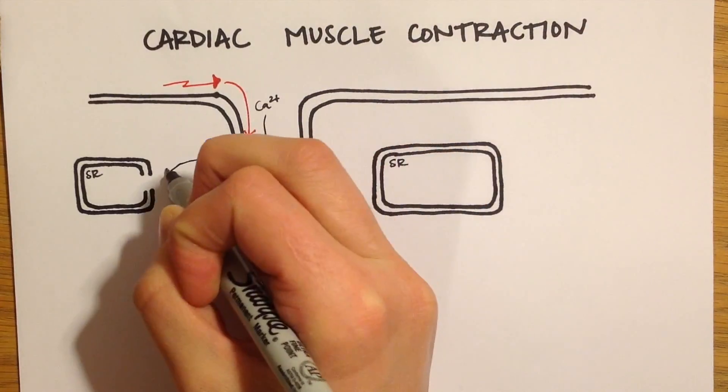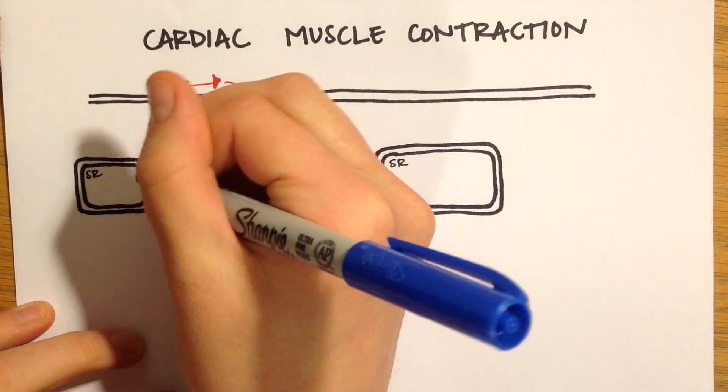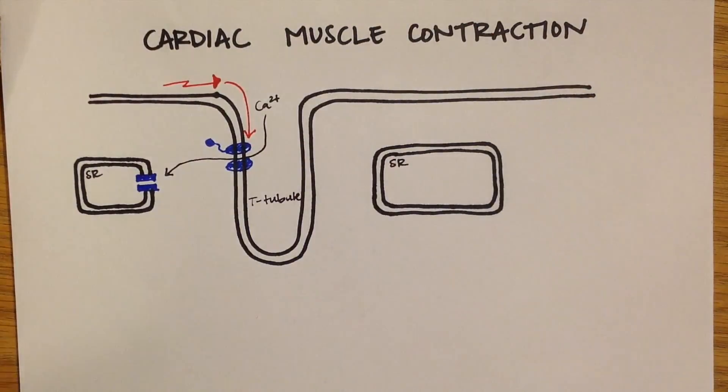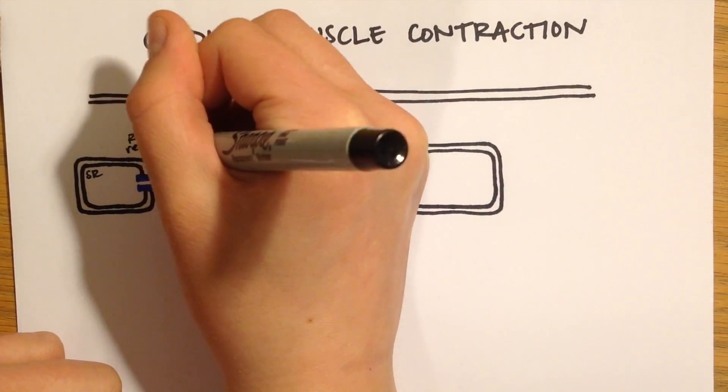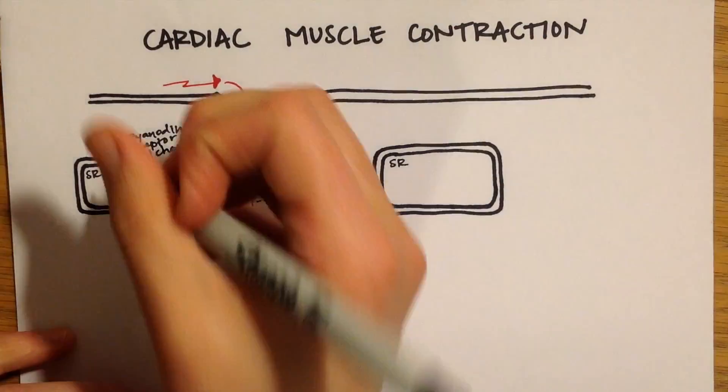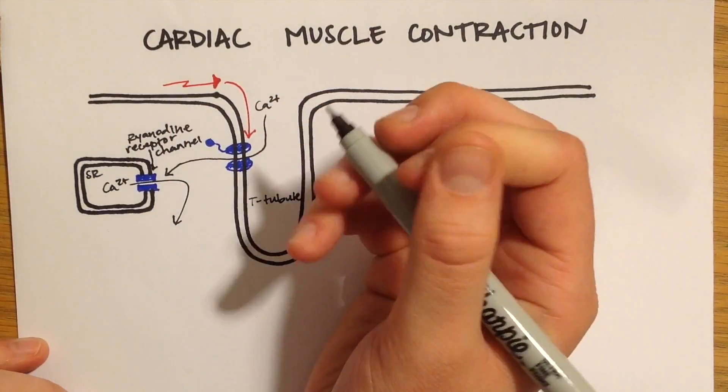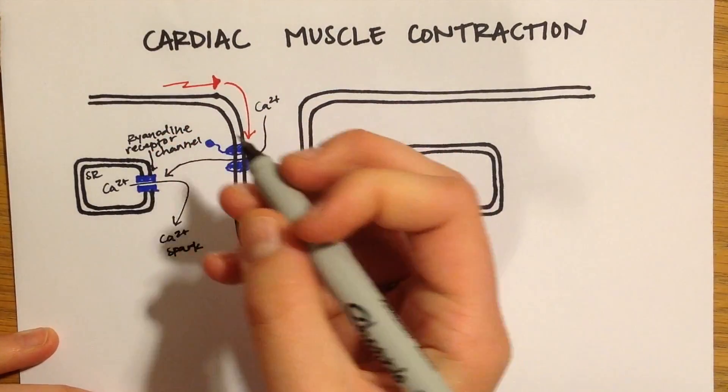The calcium then induces more calcium to be released from the sarcoplasmic reticulum through the ryanodine receptor channels. The local release of calcium causes a spark and those summed calcium sparks create a calcium signal.